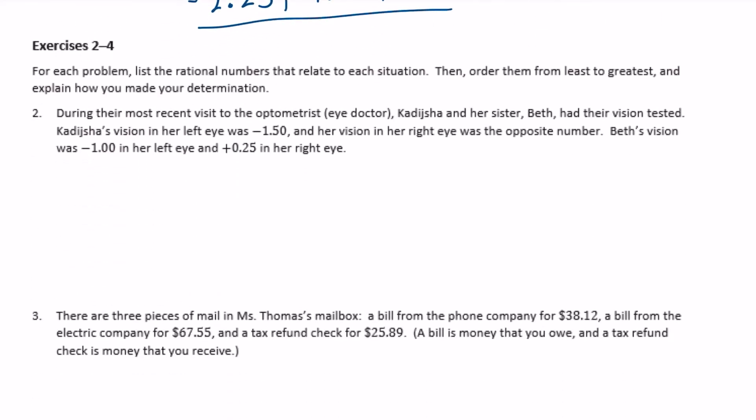Exercises 2 through 4. For each problem, list the rational numbers that relate to each situation, then order them from least to greatest and explain how you made your determination. Number 2: During their most recent visit to the optometrist, Kadisha and her sister Beth had their vision tested. Kadisha's vision in her left eye was negative 1 and 50 hundredths, and her vision in her right eye was the opposite number. Beth's vision was negative 1 in her left eye and positive 25 hundredths in her right eye.